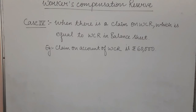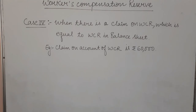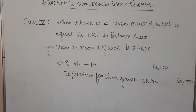Moving on to the fourth case: when there is a claim on WCR which is equal to WCR in the balance sheet. For example, the claim on account of WCR is Rs. 60,000, and the WCR in the balance sheet is also Rs. 60,000. Since the claim and reserve are equal, you can pay exactly Rs. 60,000. There is no remaining amount to distribute to partners and no loss. Only a single entry is passed: WCR account debit to provision for claim against WCR account, with narration 'being claim adjusted.'